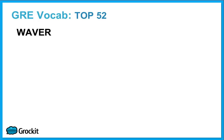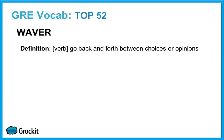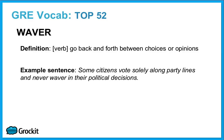Waver is our forty-sixth word. It's a verb. It means go back and forth between choices or opinions. Some citizens vote solely along party lines and never waver in their political decisions. Synonyms: fluctuate, vacillate, and dither.